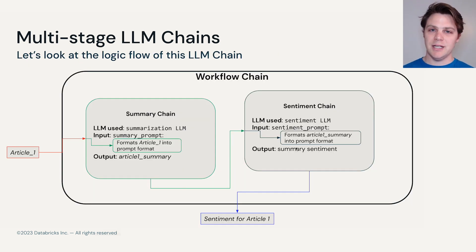So if we look at how we connect these two together, we end up with three different chains. Firstly, we have our workflow chain that connects all of the pieces together. We then have inside that workflow chain two smaller chains. The summary chain connects the prompt and the article data to the large language model that we use for summarization. The sentiment chain connects the output of the summary chain as the input to the prompt for our sentiment analysis large language model. And then the output of the sentiment chain becomes the output of the workflow chain.